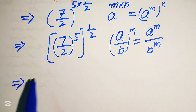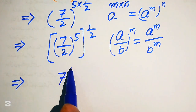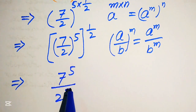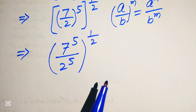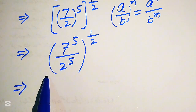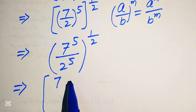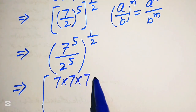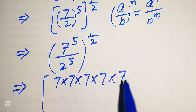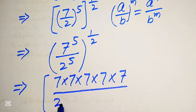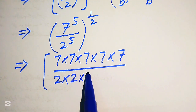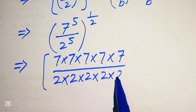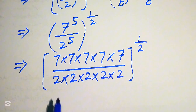According to this rule, we break the exponent 5 and write it as 7 to the power of 5 divided by 2 to the power of 5, with the whole exponent 1 over 2. We expand 7 to the power of 5 as 7 × 7 × 7 × 7 × 7, and 2 to the power of 5 as 2 × 2 × 2 × 2 × 2, with the whole exponent 1 over 2.